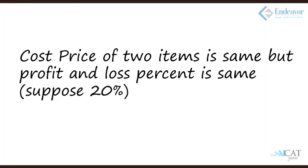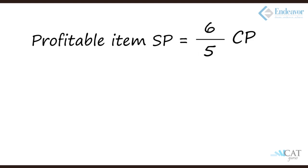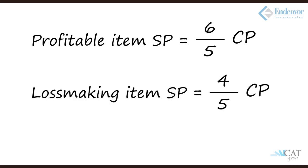Let's take some tougher ones. First case: the cost price of two items is the same, but in one case there's a profit of 20% and in the other case a loss of 20%. In the case of 20% profit, 1/5, so it becomes 6/5. So SP = 6/5 × CP. In the loss-making item, 1 - 1/5 = 4/5, so SP = 4/5 × CP.